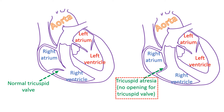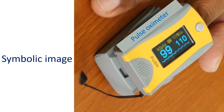In such cases, the only functioning ventricle is the left ventricle. Tricuspid atresia is another condition in which the Bidirectional Glenn procedure is done. The conditions in which this procedure is performed usually have poor blood flow to the lungs and hence a low oxygen saturation in the blood vessels of the body.